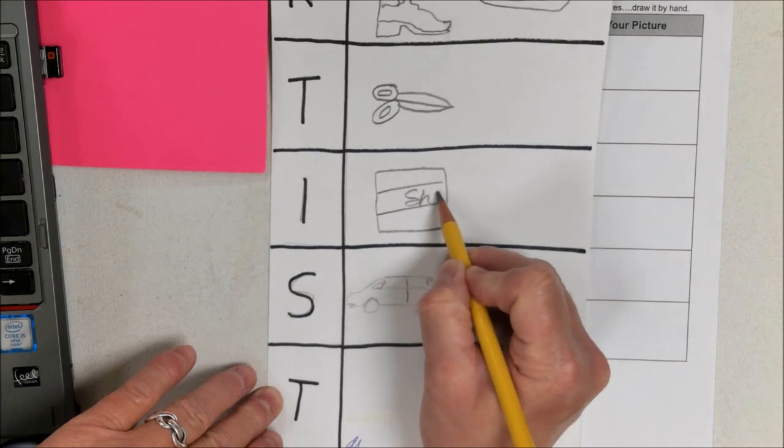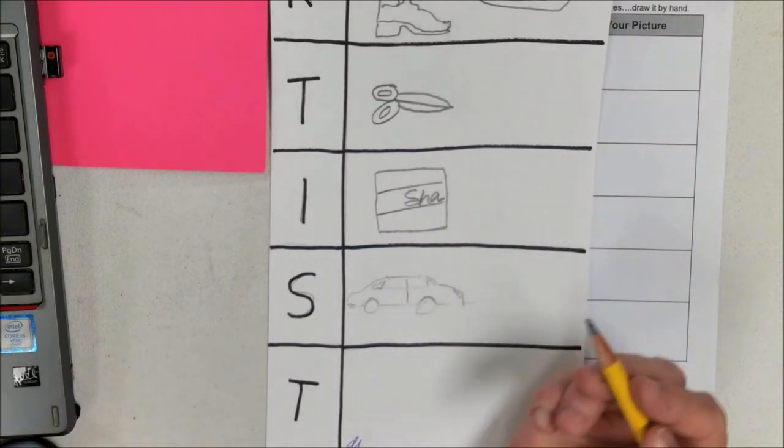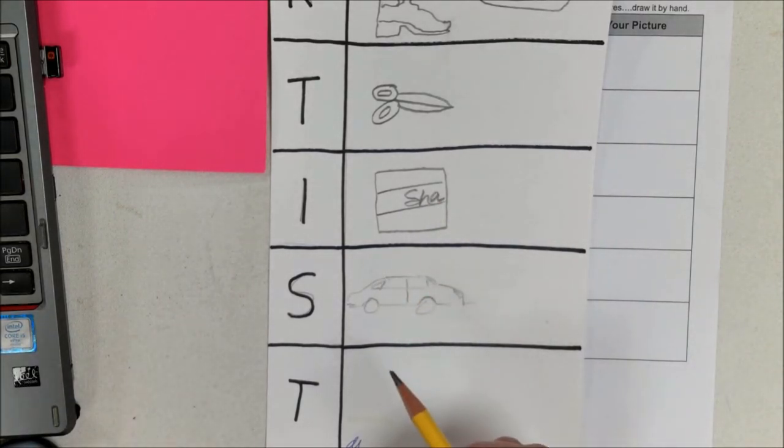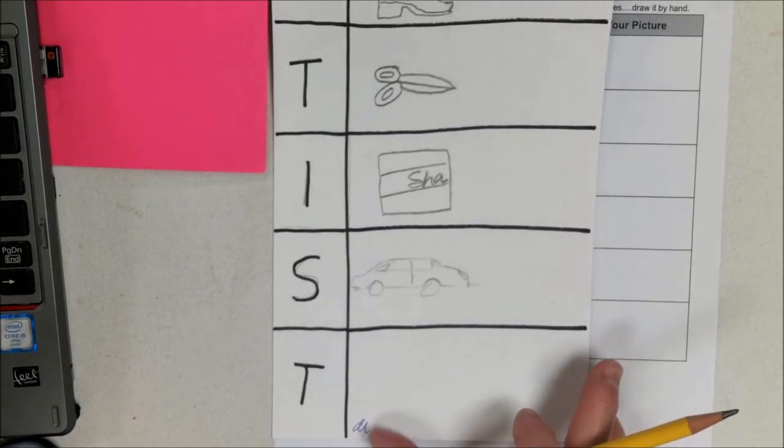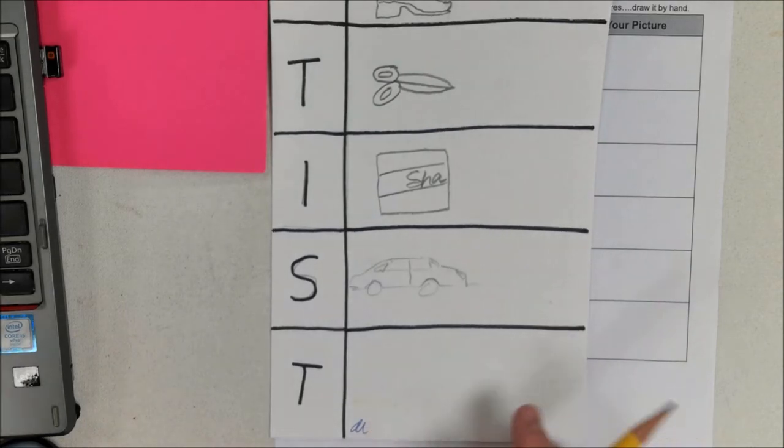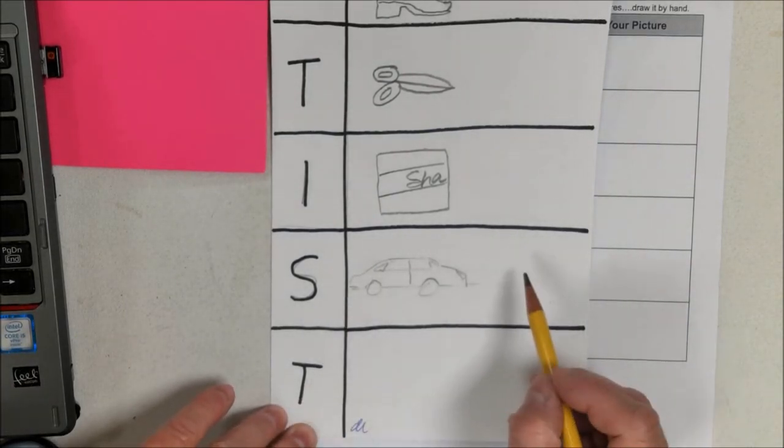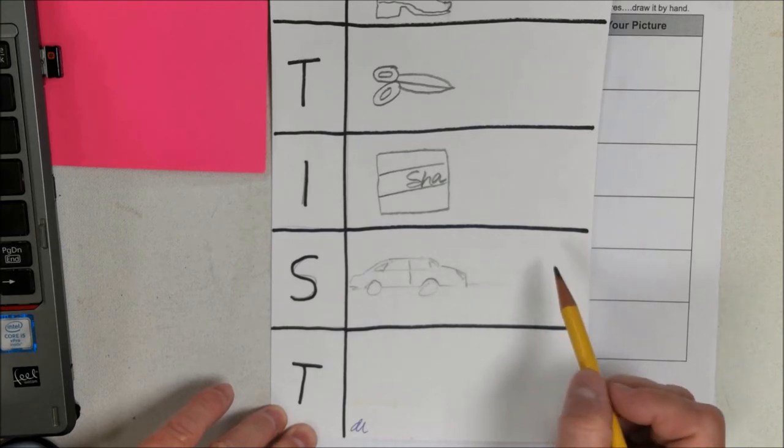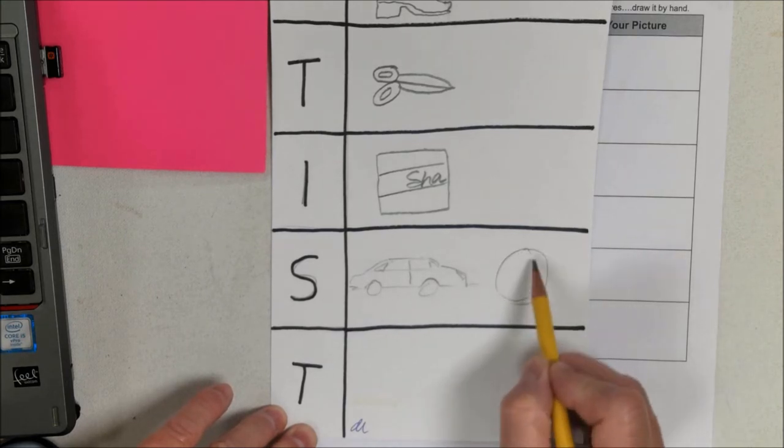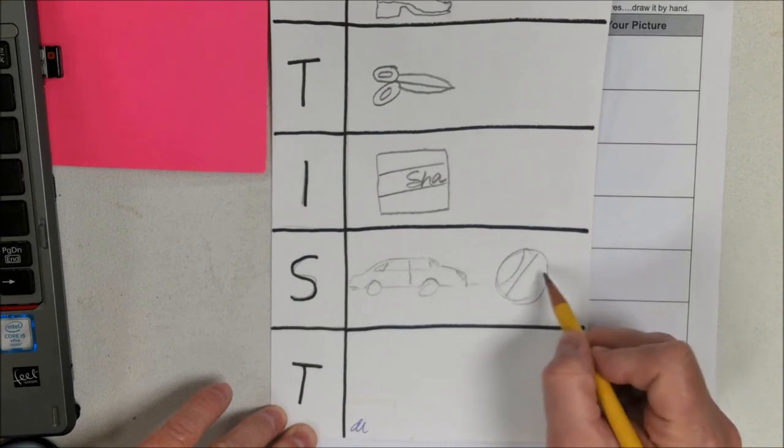S on here is a sketch, and a sketch is a really fast drawing. So I just did a sketch of a car. If I were gonna draw a sketch of a ball, I might just draw a quick circle, maybe draw some lines to make it look like a basketball.